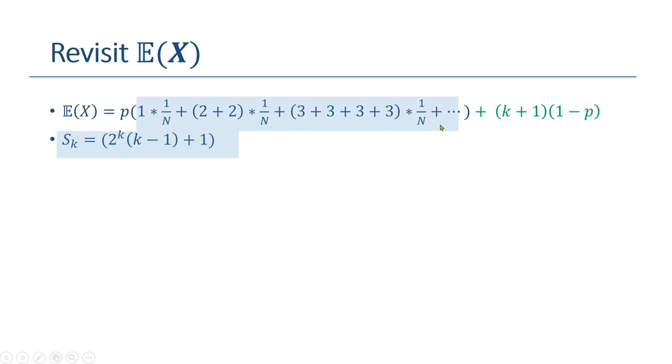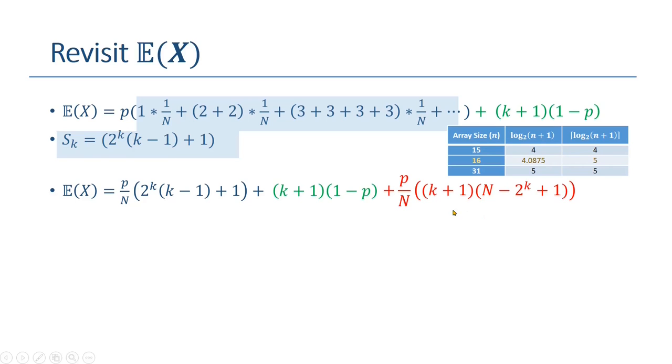Let's now revisit expected value, which was this expression. And the highlighted blue has been simplified to this expression. Finally, we have this one plus something on red, which we haven't discussed yet. This is to cater for those items who do not produce complete passes.